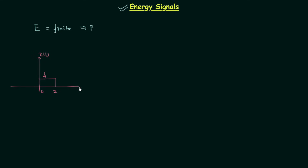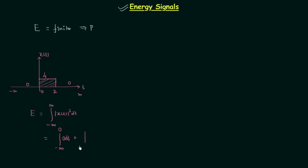We already know the formula to calculate the total energy. This signal is 0 from minus infinity to 0, from 0 to 2 it is 4, and from 2 to infinity it is again 0. So this is a finite duration signal. To calculate the total energy we use the formula: integration of |x(t)|² dt from minus infinity to infinity. From minus infinity to 0 the signal is 0, from 0 to 2 the signal is 4, and from 2 to infinity the signal is again 0.